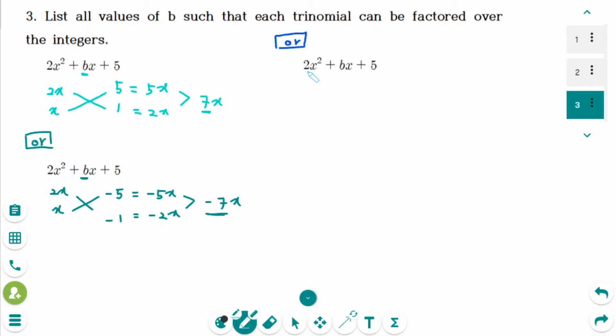Or change the first one. x times 2x makes 2x squared, then 5 times 1 makes 5. Then cross multiply makes 10x. This one is x. Combined together makes 11x. So b can be 11.